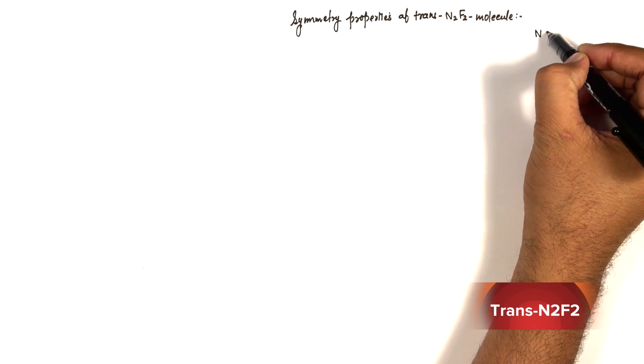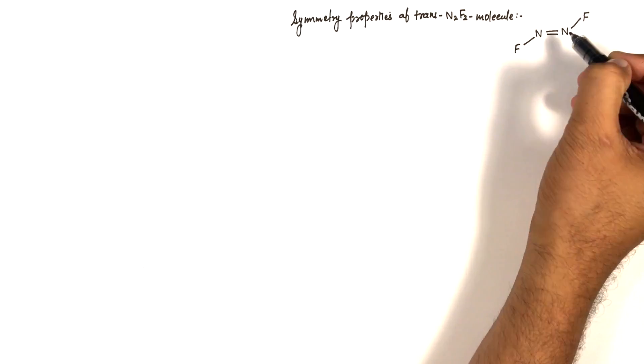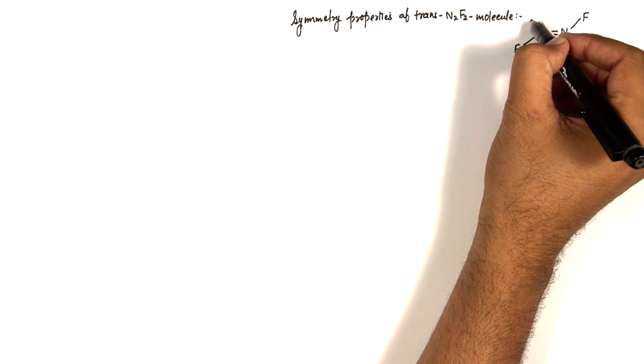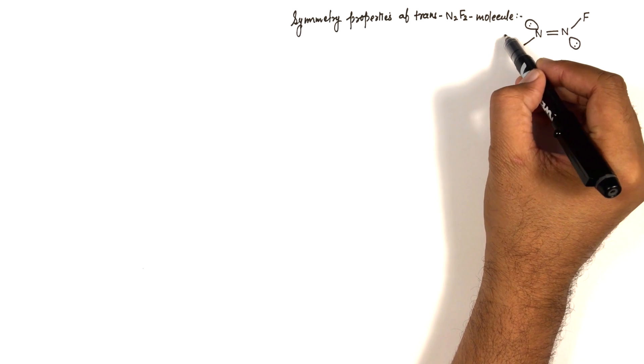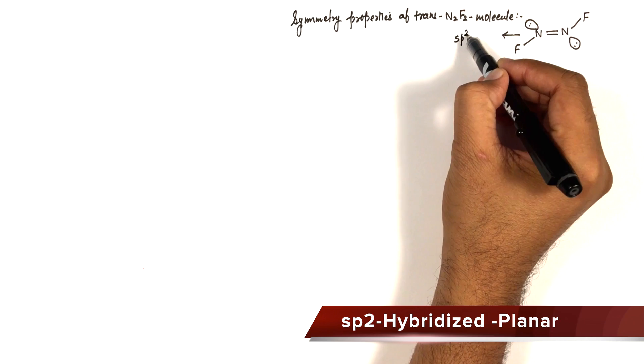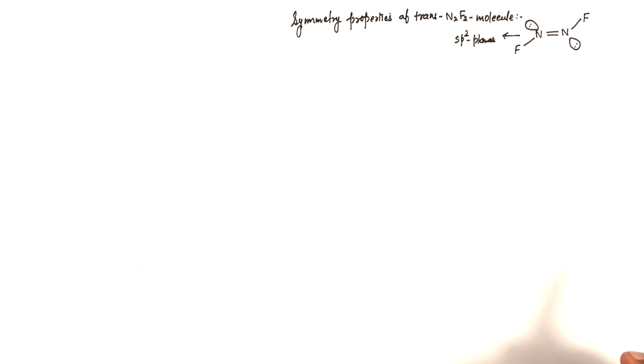Hi everyone. Today I will explain the symmetry properties of the trans N2F2 molecule. Before starting our investigation, just have a look at the structure of this trans N2F2 molecule. This molecule has two fluorine atoms, each with one lone pair of electrons. When we check the hybridization of the nitrogen atoms, we find that each nitrogen atom is sp2-hybridized, and this molecule has a planar structure.